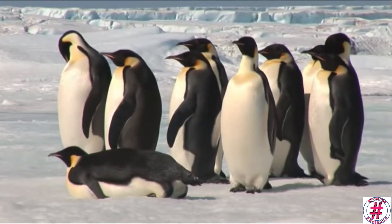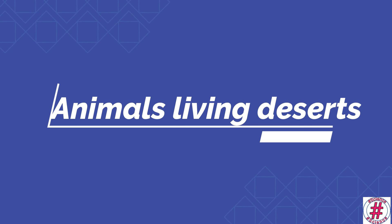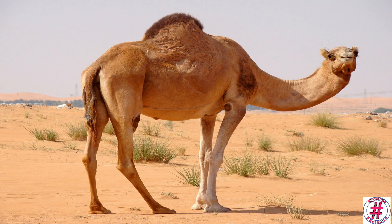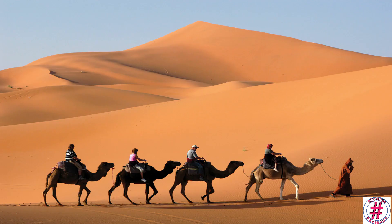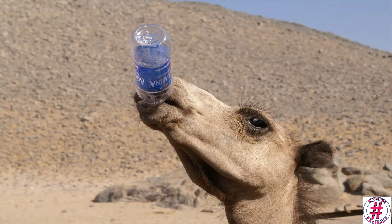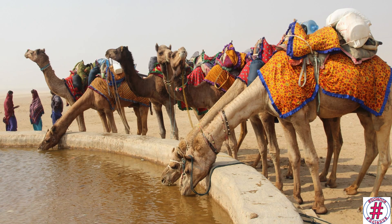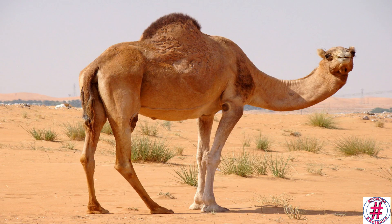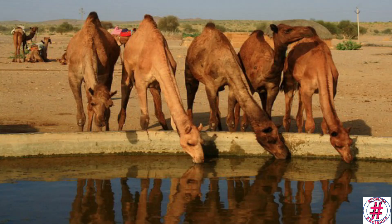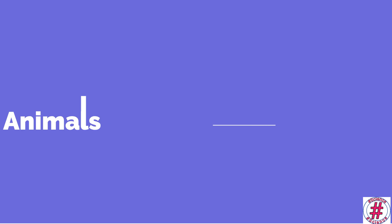Animals that live in deserts: deserts have very hot days and cold nights, and there is a scarcity of food and water. The camel is the animal of the desert. They have broad, flat, padded feet to help them walk on sand. They can live without water and food for many days, using the fat stored in their hump when they do not get food.